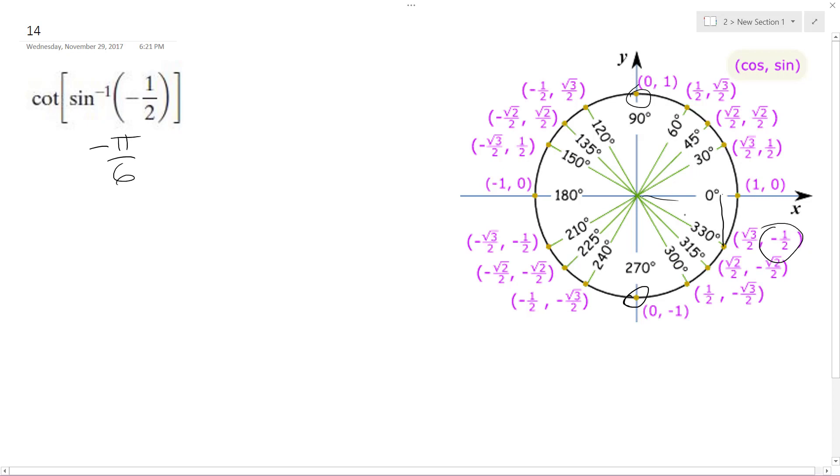That's why I labeled that there. So we're going to take the cotangent of negative pi over six. So this is root three, negative one, and then two for r, which is the hypotenuse.